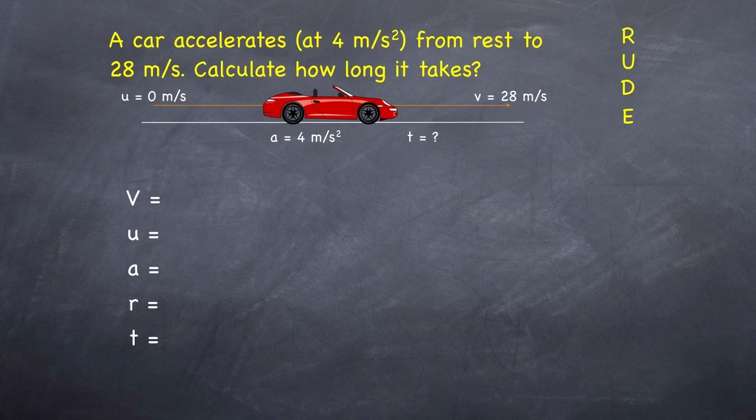Now as we then go through the question, I ask them to fill that information out. The first thing we're given, of course, is the acceleration at 4 meters per second squared. u, the initial velocity, well it says it's from rest, so that's 0 meters per second. The final velocity, of course, is given as 28 meters per second. And we're asked to find how long it takes, so that's the time, and I put a question mark next to it. I therefore leave r blank because r is the displacement, and I'm not asked for it in this question, nor am I provided it.